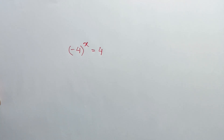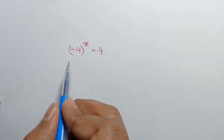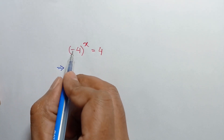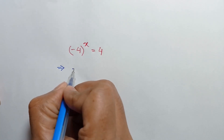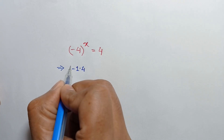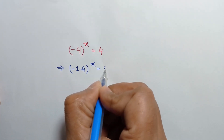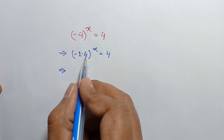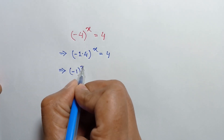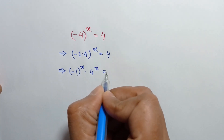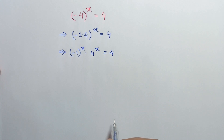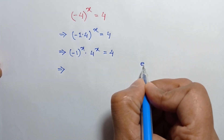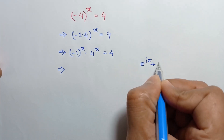Hi everyone. In this video I am going to show how to solve negative 4 to the power x is equal to 4. Negative 4 can be written as negative 1 times 4, whole to the power x is equal to 4, or it can be written as negative 1 to the power x times 4 to the power x is equal to 4. According to Euler's theorem we can write e to the power i pi plus 1 is equal to 0.